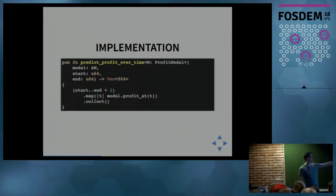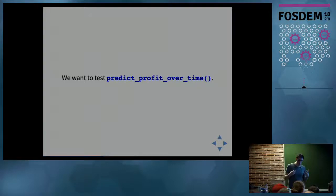We give it a start and end time series, the model itself, which can be any model. Then we simply iterate through all the individual timestamps, generating the profit at that timestamp and returning a vector of the profits. We want to test this function. Simple function, but for illustration purposes, let's test it.